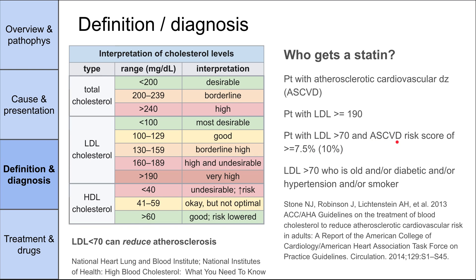This risk score can be found using calculators online for atherosclerotic cardiovascular disease risk. It takes into account the patient's age, race, history of diabetes, hypertension, current blood pressure, whether or not they're on blood pressure meds, as well as their total cholesterol and HDL levels. One of the major associations recommends treating anybody with a moderately high LDL and a risk score of 7.5% with a statin. This risk score means that in the next 10 years the patient has that percent chance of having a coronary heart attack, unstable angina, or a coronary vascular event.